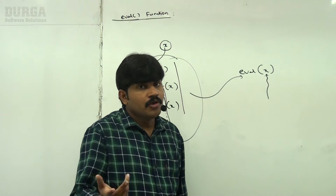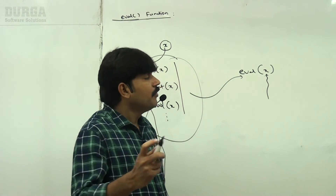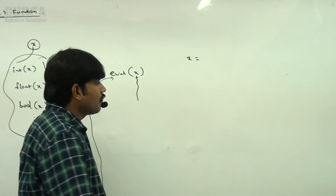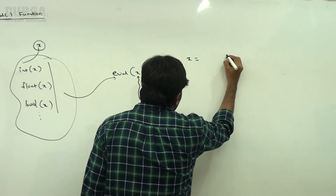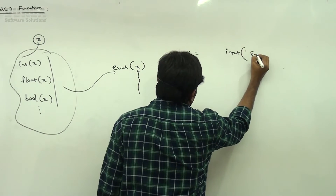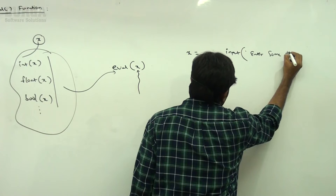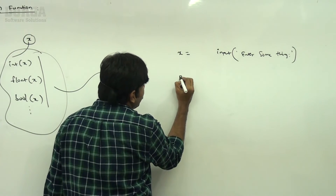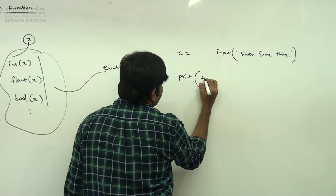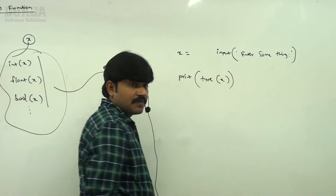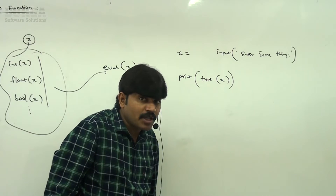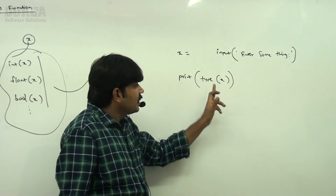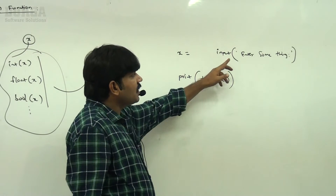Here, assume x is equal to input() — enter something. Now print(type(x)). Can you confirm — the type of x is always str type, because the input() function always returns string only.